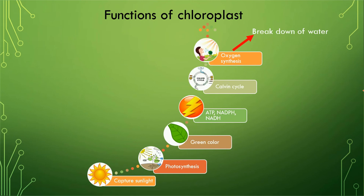The last function of chloroplast is that it provides oxygen. We know that plants are important because they provide oxygen — that oxygen is actually generated in the chloroplast. Water molecules are broken down in the chloroplast, and as a result, oxygen is produced and released out of the cells, which we can use to breathe and perform all other functions.